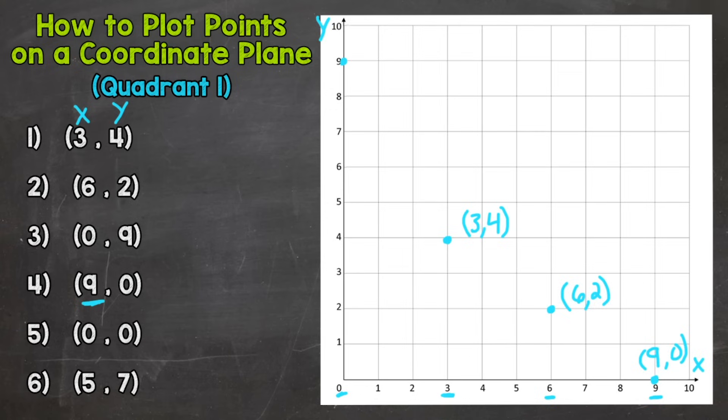Now number five we have (0, 0). So we don't move over at all or up. So our point is going to be right here on (0, 0), and this is actually called the origin. That's where everything starts because on all the other ordered pairs you start there, go over and then up. So again, (0, 0) is the origin, we didn't go anywhere.